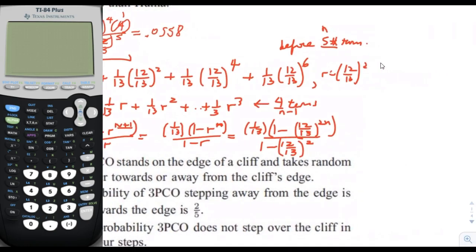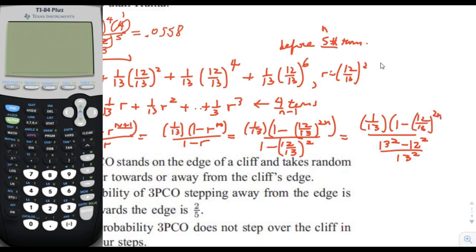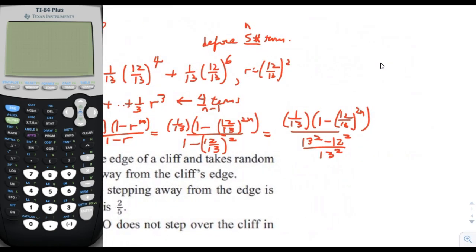Substituting the r value back in: the top becomes 1 minus (12/13)^(2n) and the bottom becomes 1 minus (12/13)^2. Putting both over a common denominator, the bottom becomes (13^2 minus 12^2) over 13^2, which is (169 minus 144) over 169, giving 25 over 169. The top has 1/13 times (1 minus (12/13)^(2n)).